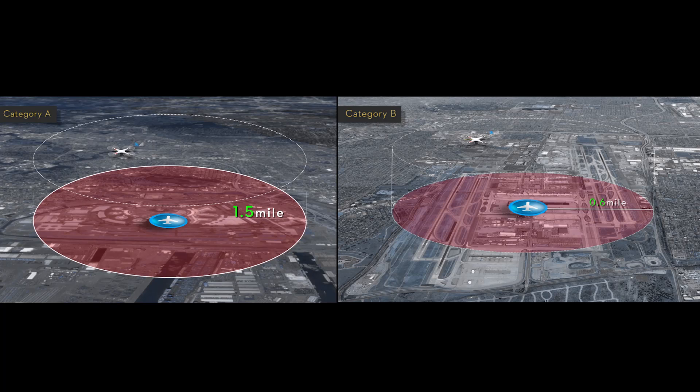So what happens if you accidentally fly into a safety zone without a clear GPS signal? Once the GPS signal is strong enough to accurately locate your Phantom, the following will happen. If you are flying in an area that otherwise limits takeoff, so 1.5 miles away for a Category A zone or 0.6 miles for a Category B safety zone, your Phantom will land immediately.